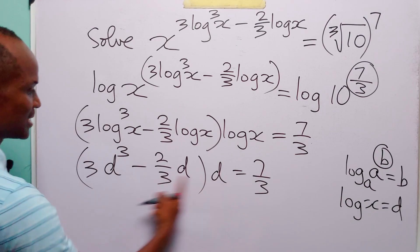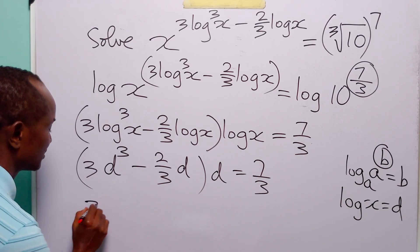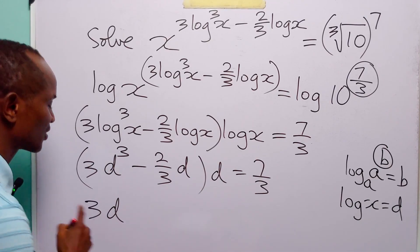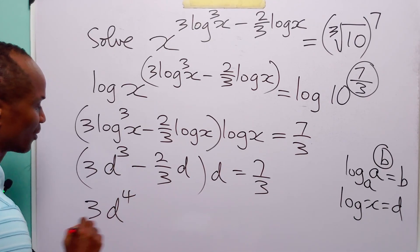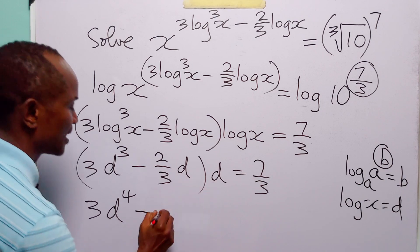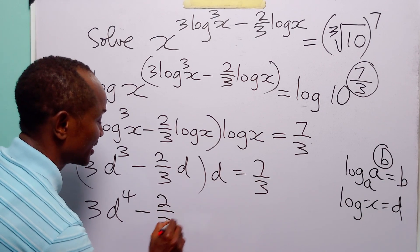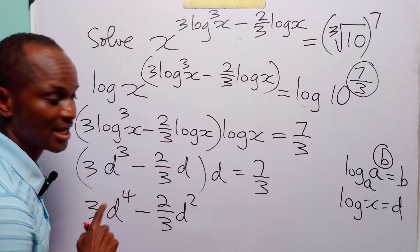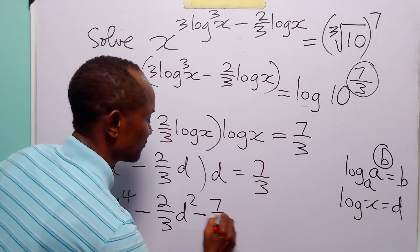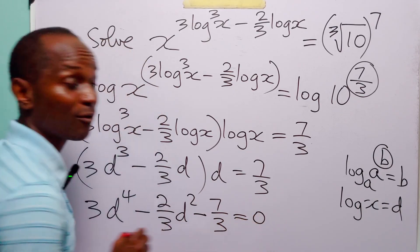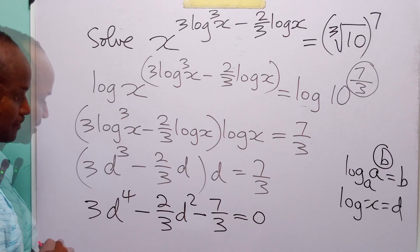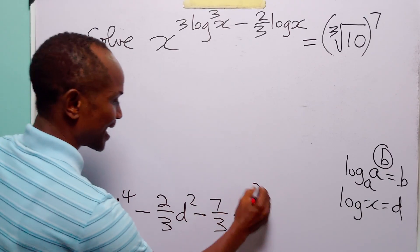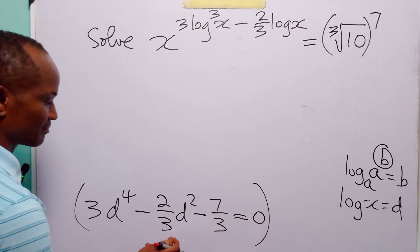And of course, here we have 3d to the power 4 minus 2 over 3 d squared minus 7 over 3 is equal to 0. To take care of these two fractions, let us multiply through this equation by 3.